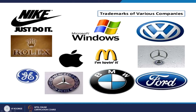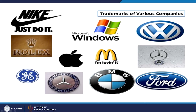For example, Nike's tick mark is easily recognizable — a company puts in a lot of effort to differentiate itself in the market. These signs have to be protected; if they are not, the differentiation power will be lost. Examples include Rolex, GE General Electric, Mercedes-Benz's three-star logo, Apple, BMW, Ford, Volkswagen, and Microsoft Windows.